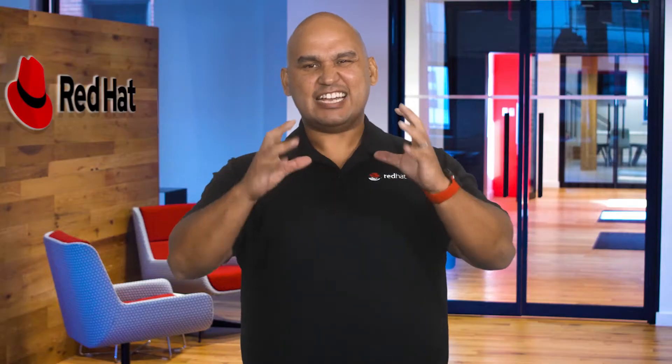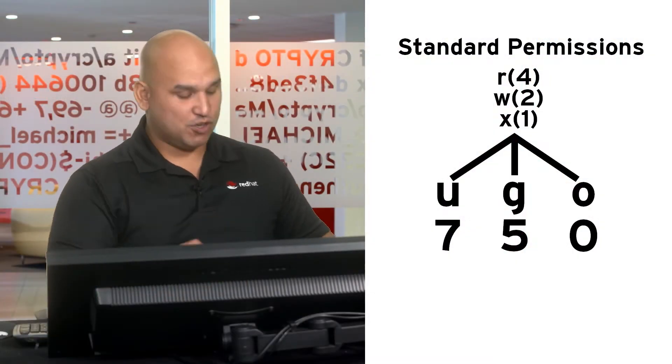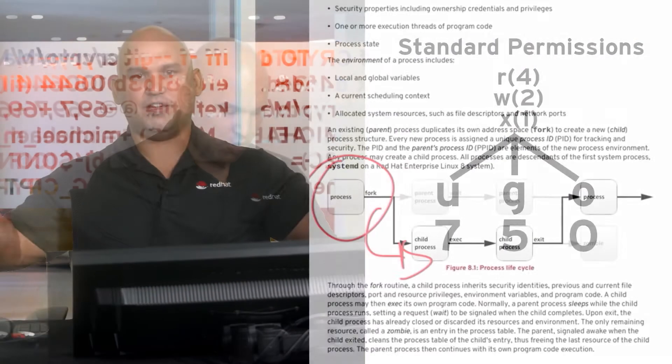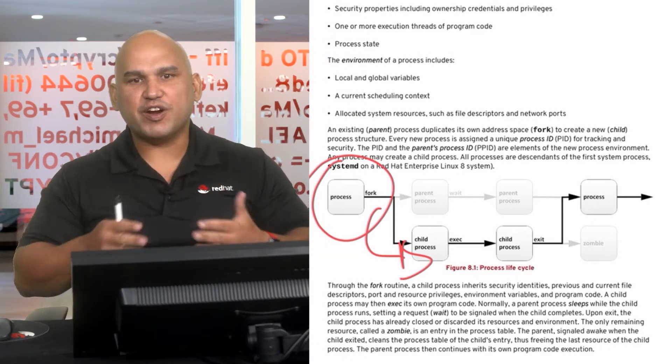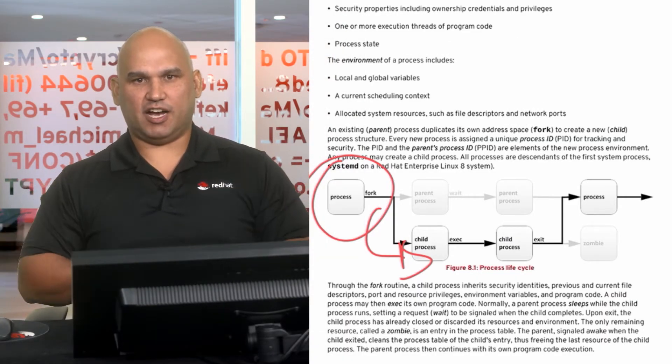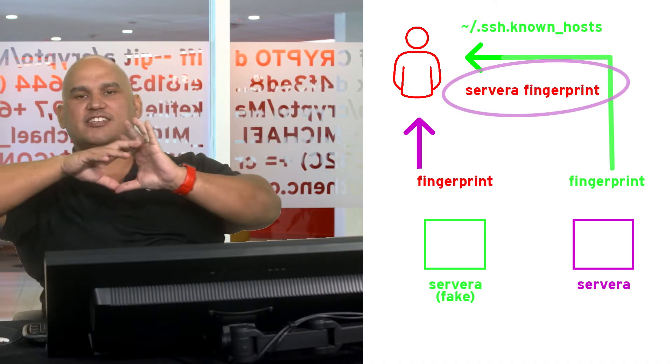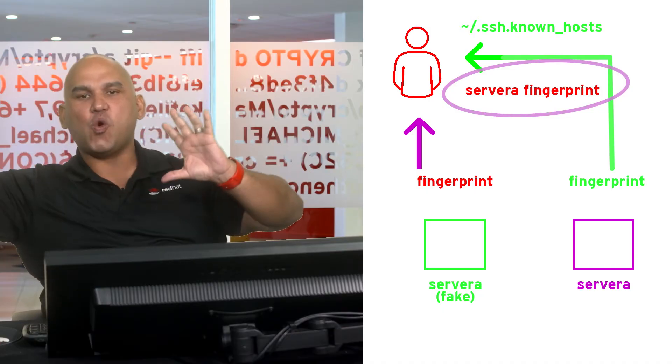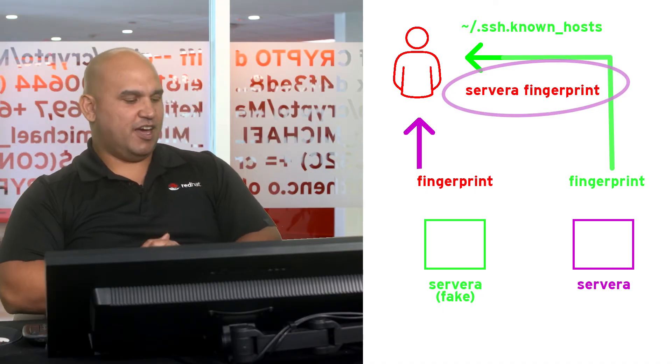In this class we are going to talk about some basics like how to create users and how to create groups. But something that is quite fundamental and really important is understanding how permissions really work. Some people think that there are only three permissions, but there are a lot more and we're going to be exploring these. We'll also be touching on systemd and how to connect to remote services using SSH without authenticating using a password.